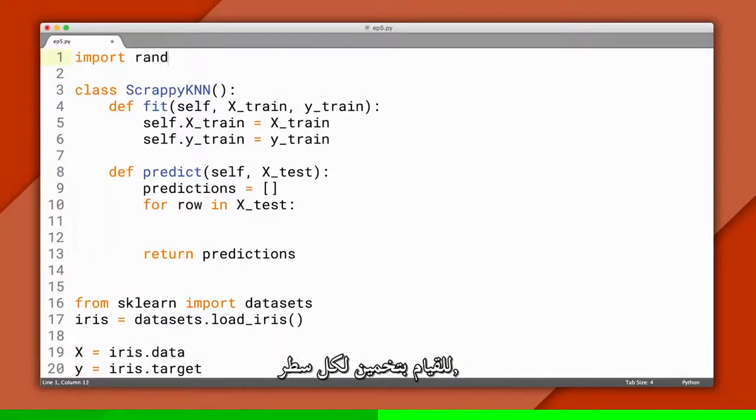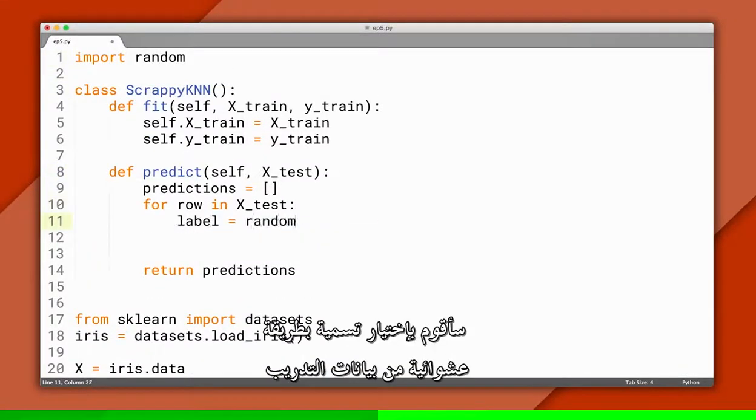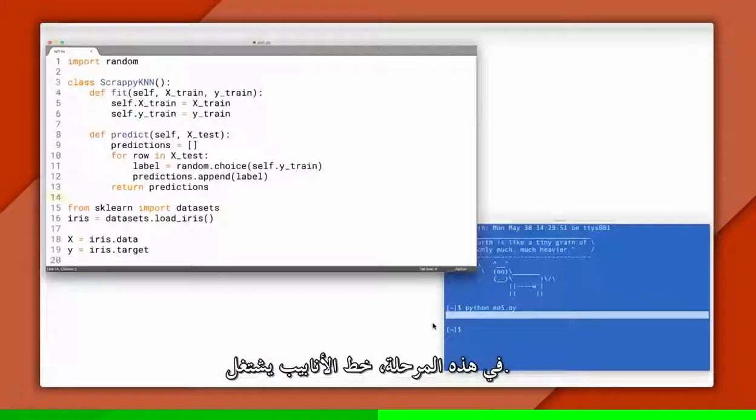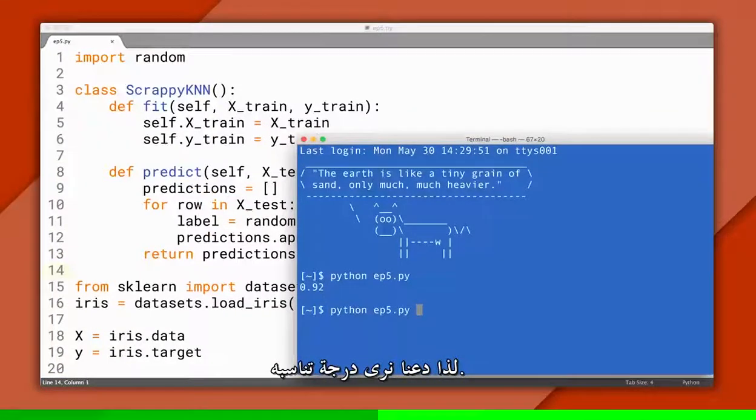To make a prediction for each row, I'll just randomly pick a label from the training data, and append that to our predictions. At this point, our pipeline is working again, so let's run it and see how well it does.